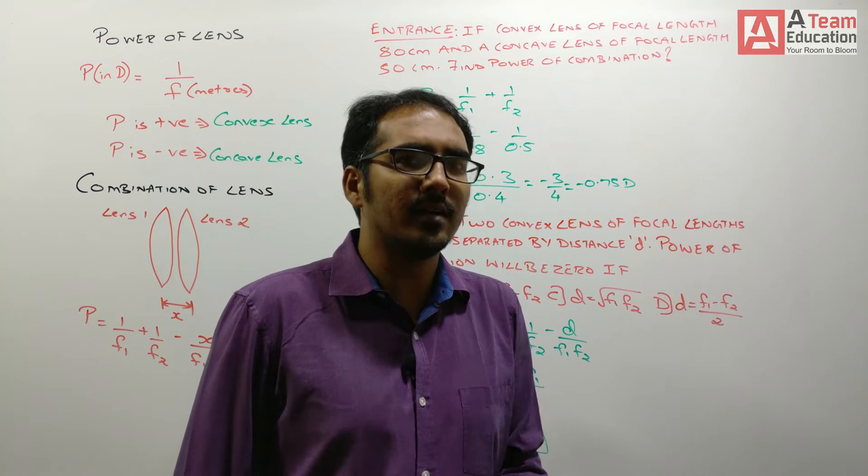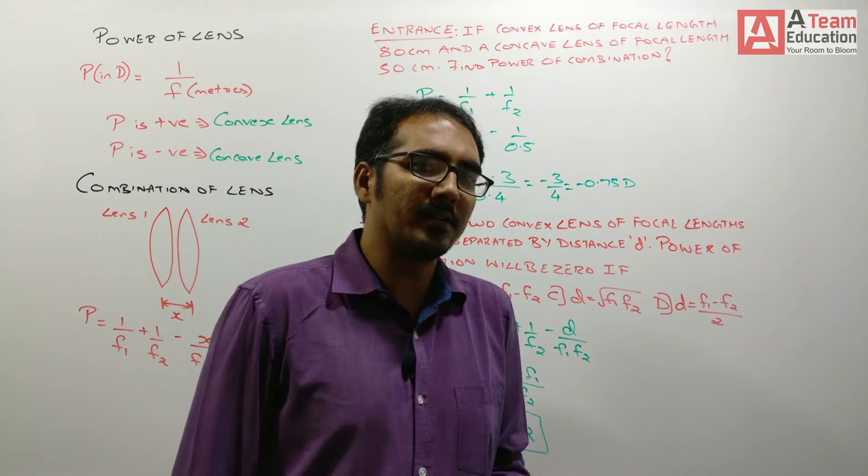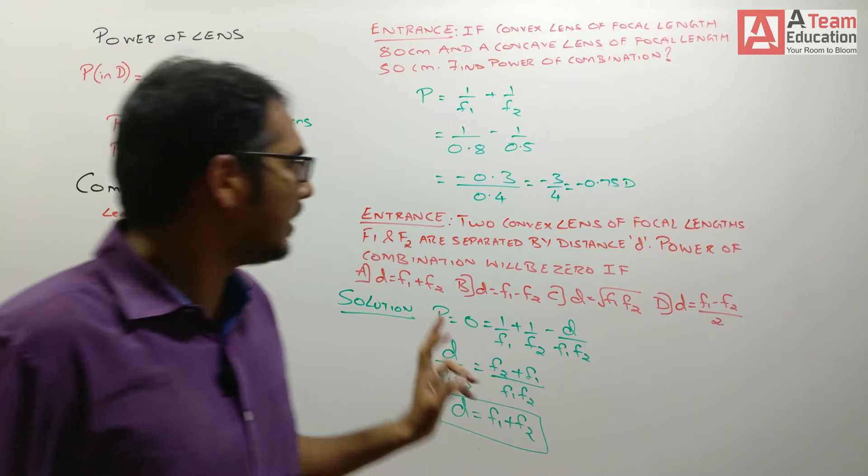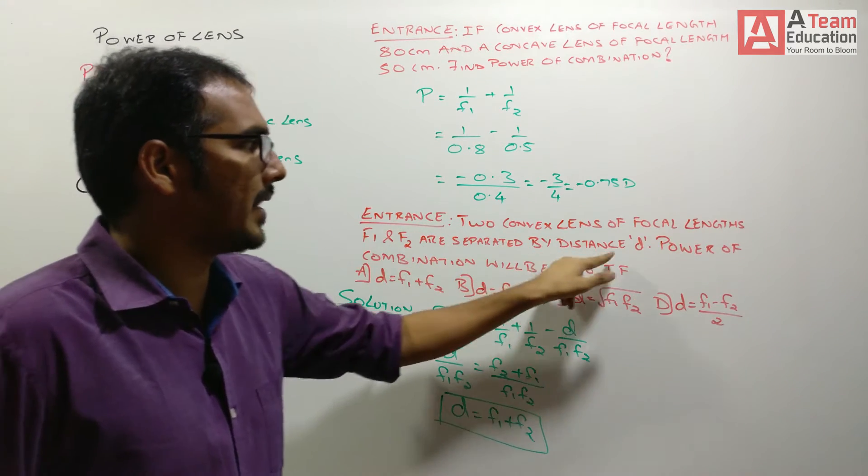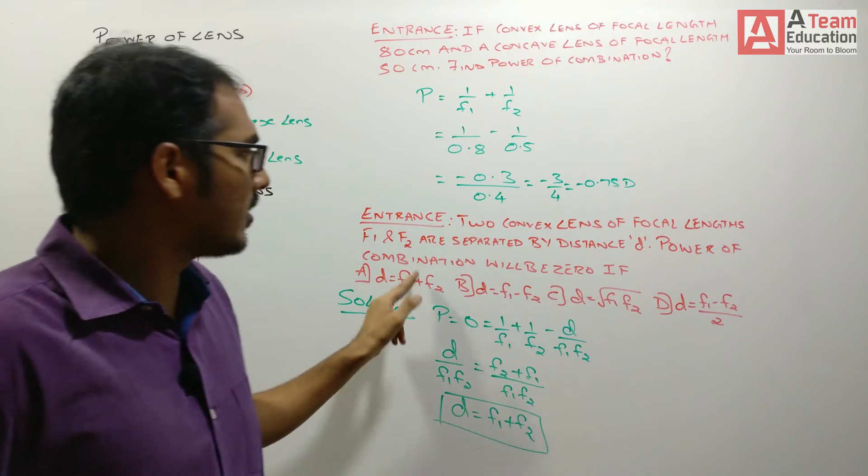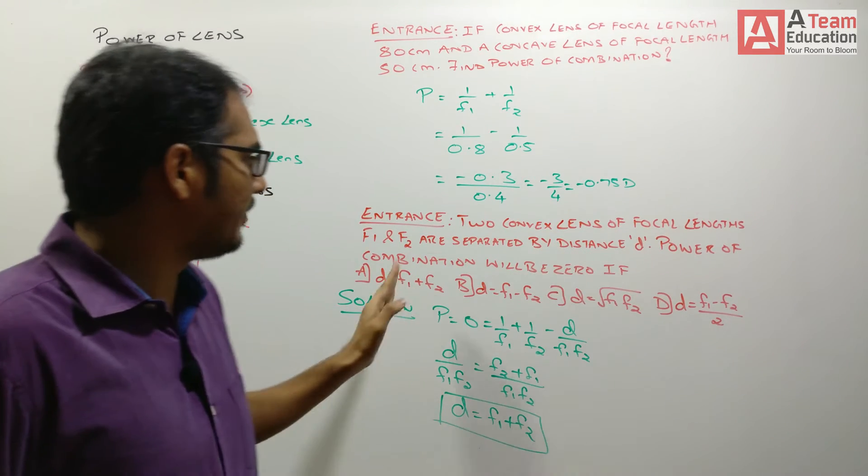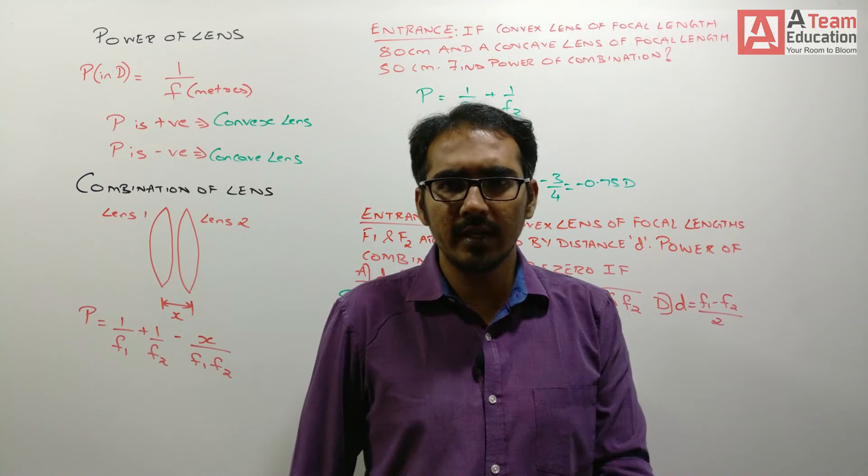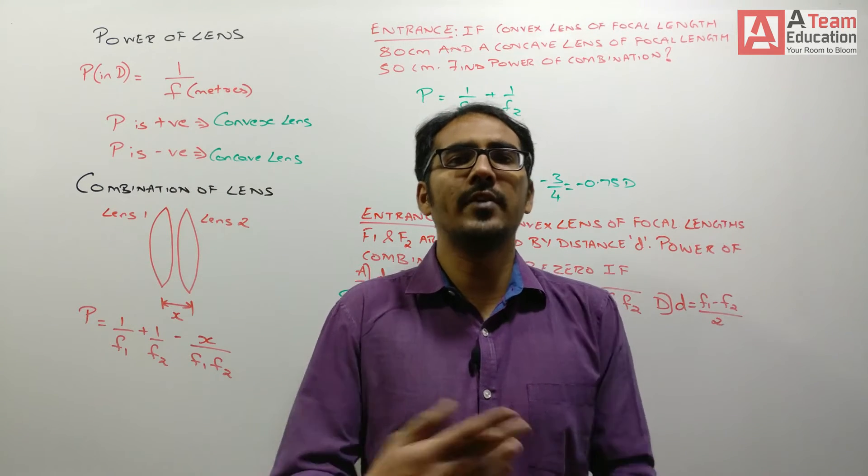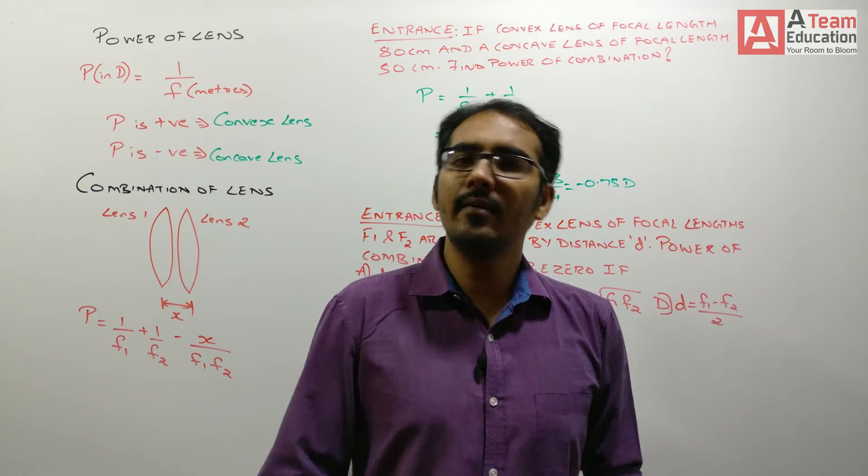This is a little bit difficult question but the solution is quite simple. Two convex lens of focal length f1 and f2 are separated by a distance d. Power of combination will be 0 if, and we have been provided with four solutions. Again, you can take a pause over here for two minutes. Try solving it on your own. If you can't get it, we will see the solution.